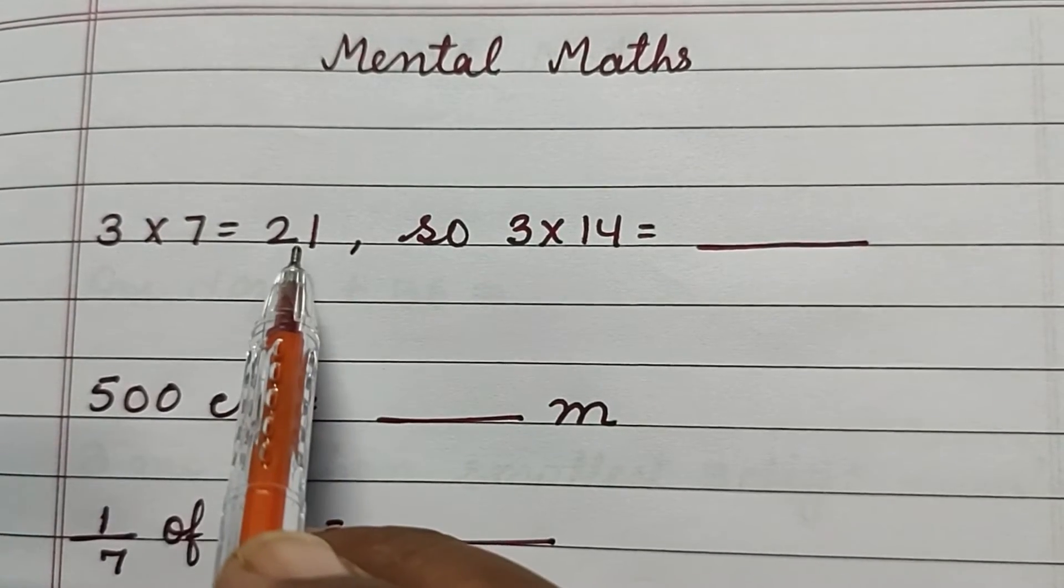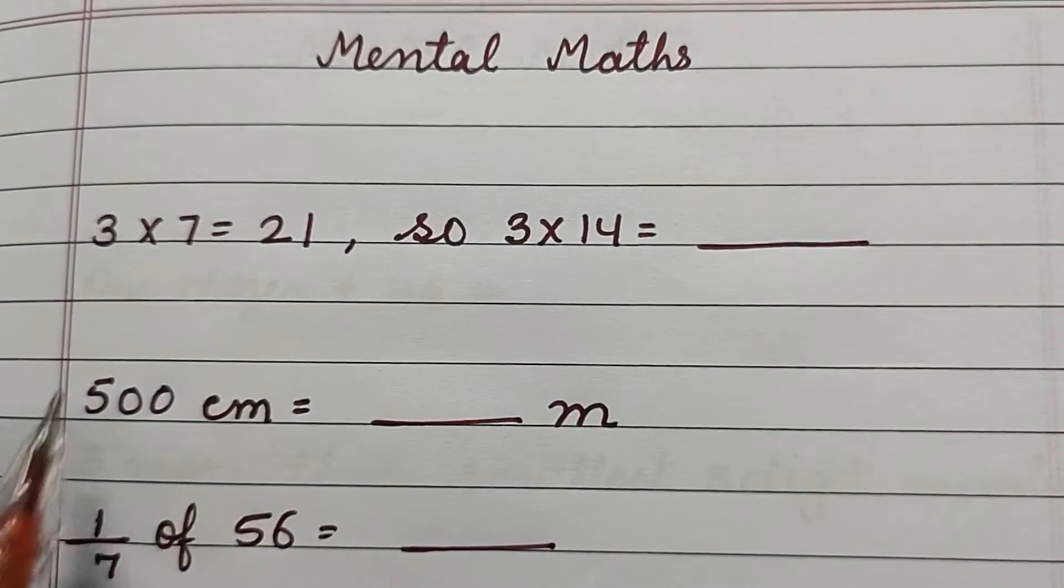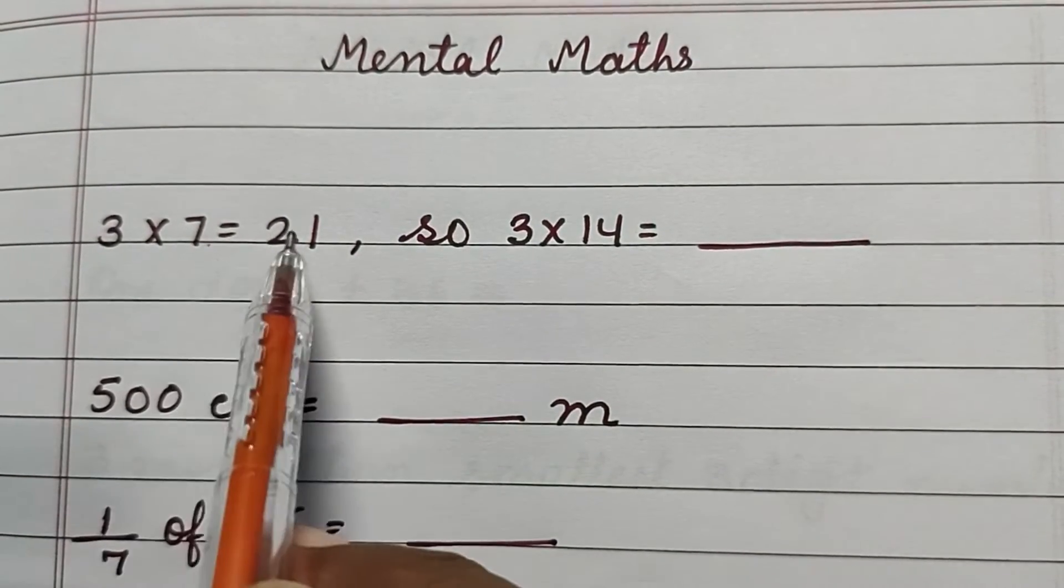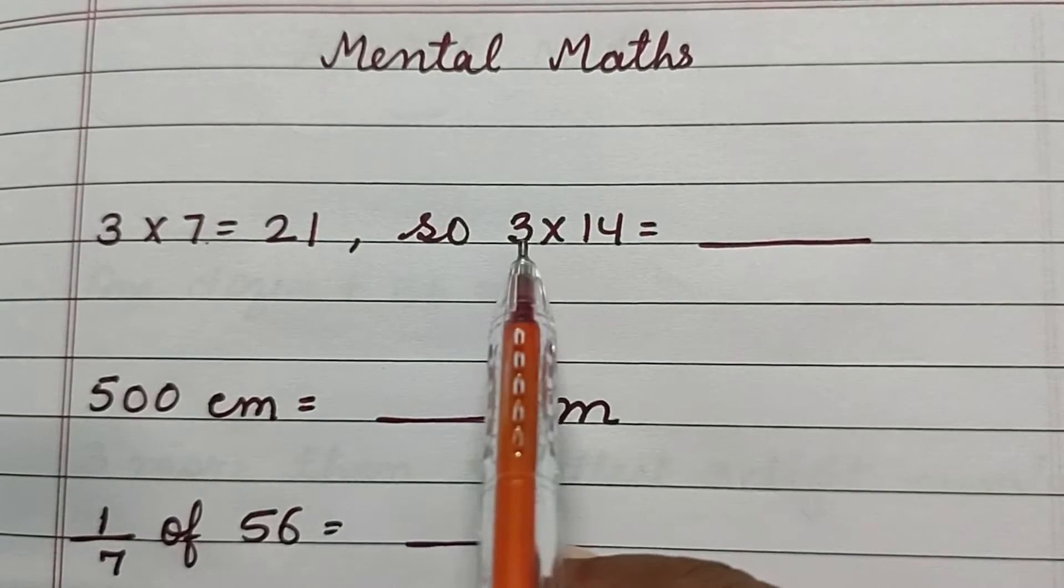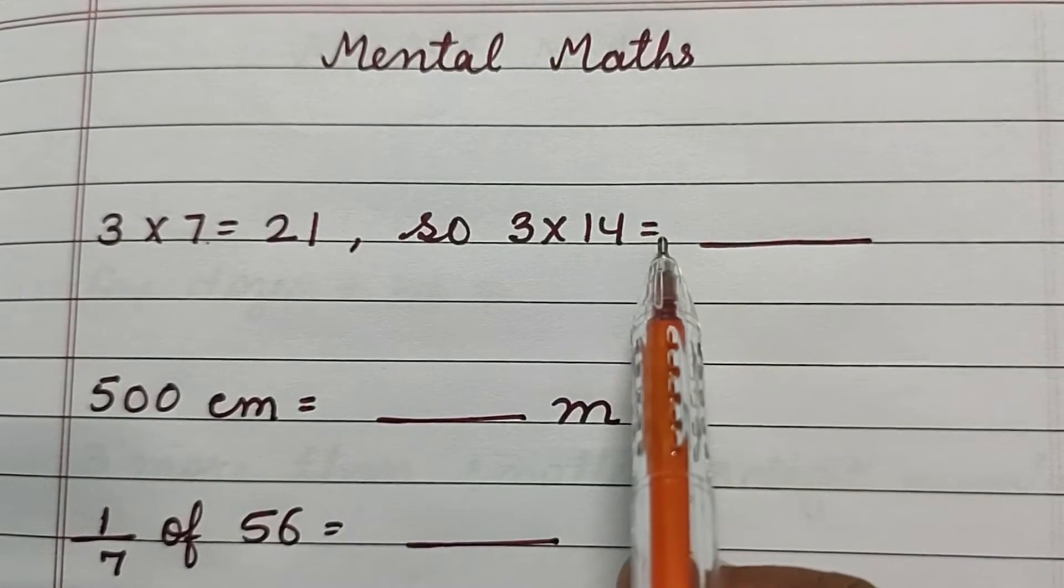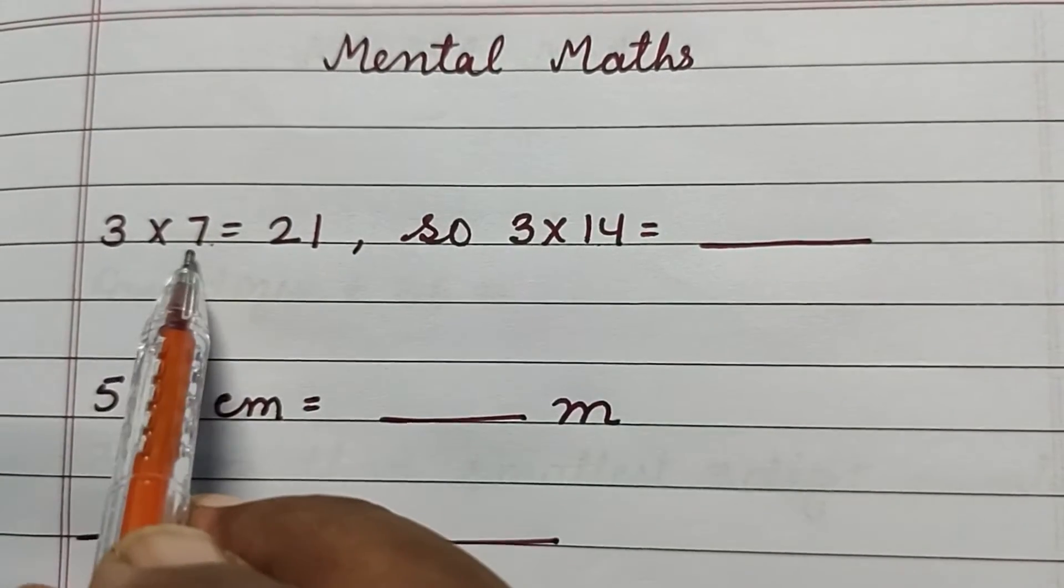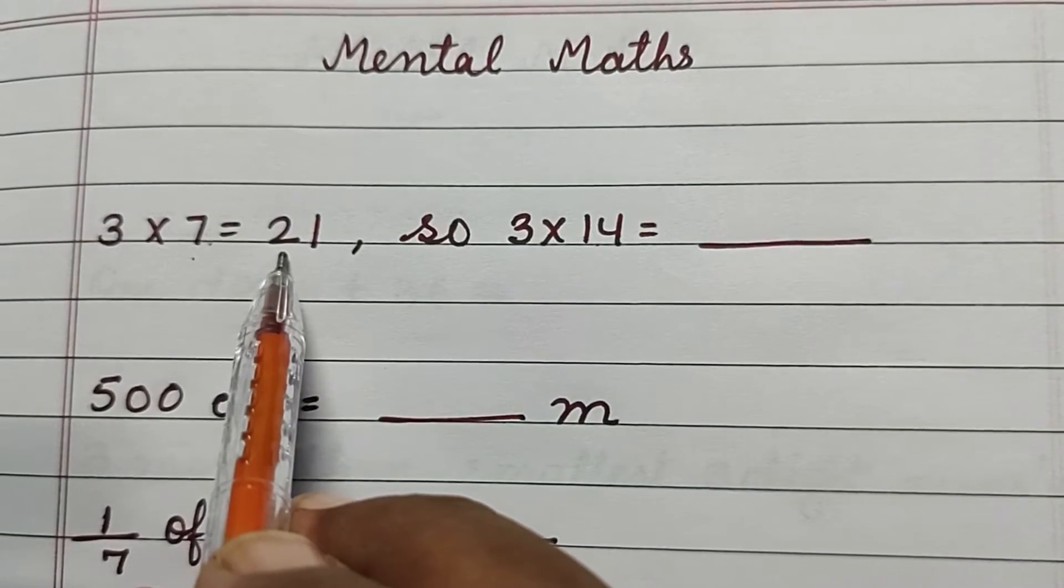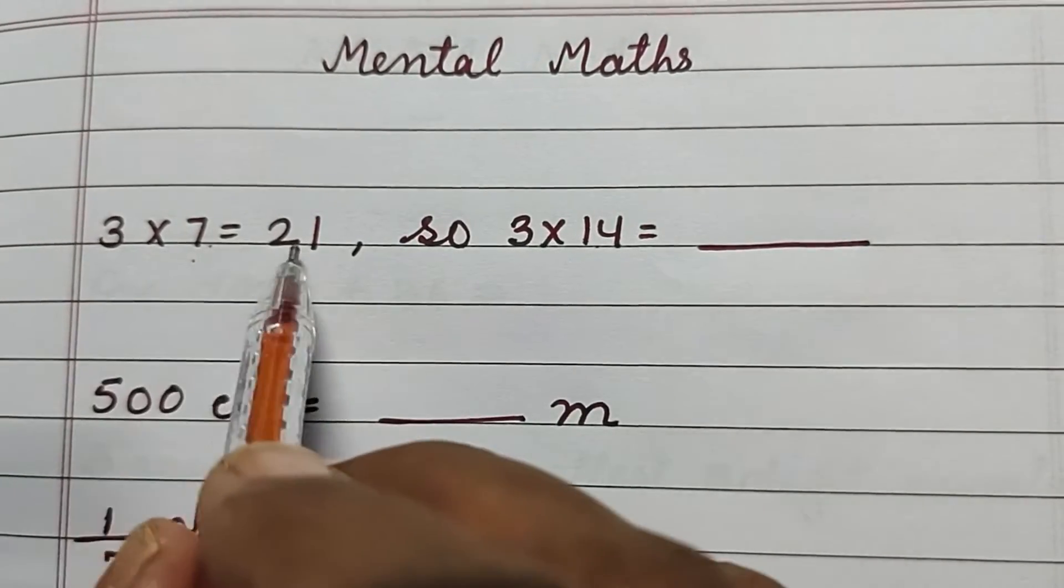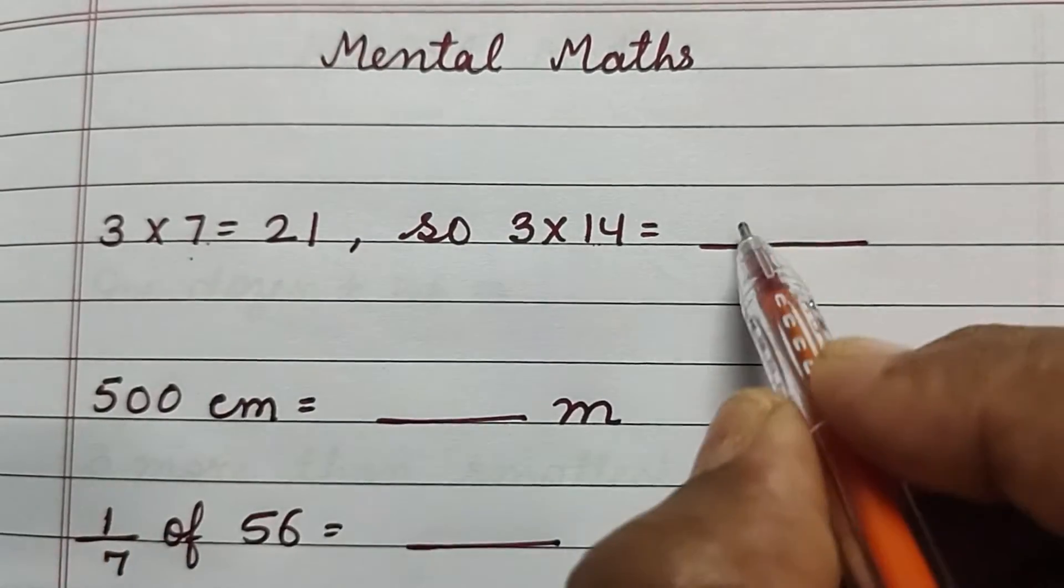3 into 7 is 21, so we have to find 3 into 14. If we see that 14 is double of 7, so the answer is double of this answer. Double of 7 is 14 and double of 21 is 42, and 42 is our answer.